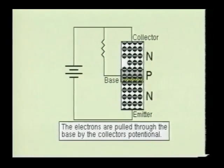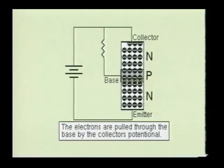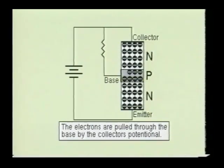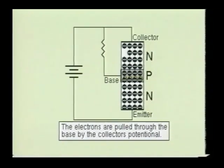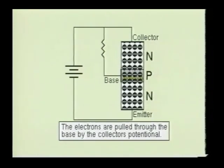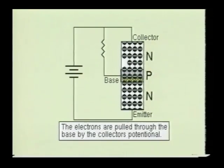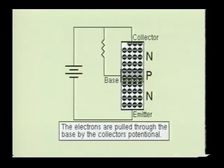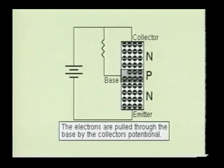When the majority charge carriers from the emitter flow into the narrow base section, they become minority charge carriers. The reverse bias junction between the collector and base will enhance the flow of these minority carriers. The reverse bias then carries the minority carriers into the collector section.